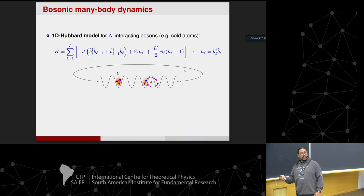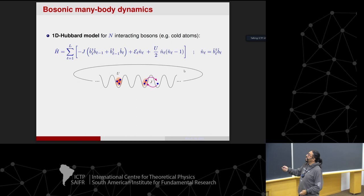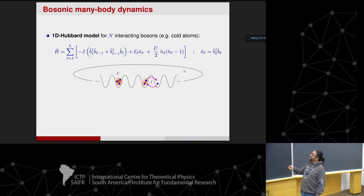This object is called the Bose-Hubbard Hamiltonian. It describes cold atoms in optical lattices, and it's the most standard bosonic Hamiltonian you'll see. It has one-body terms quadratic in creation and annihilation operators, and two-body terms. The number operator N is something like B†B, so this two-body object is fourth order.